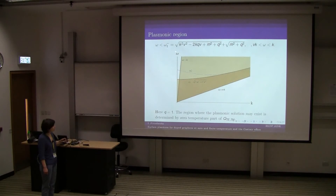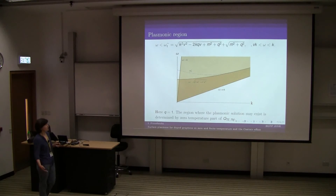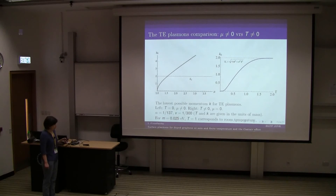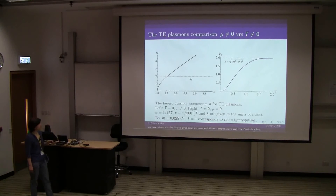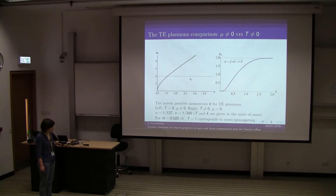This frequency omega moves like this, and this dark yellow region is totally defined by the zero-temperature part. So we can see that in the case of zero chemical potential and non-zero temperature, the region where we can look for surface plasmons is the same as in the zero-temperature case. Now comes the comparison between two cases: non-zero chemical potential and non-zero temperature. Transverse electric solutions have a starting point that depends on the parameter — either mu or temperature — and everything is plotted in units of mass.